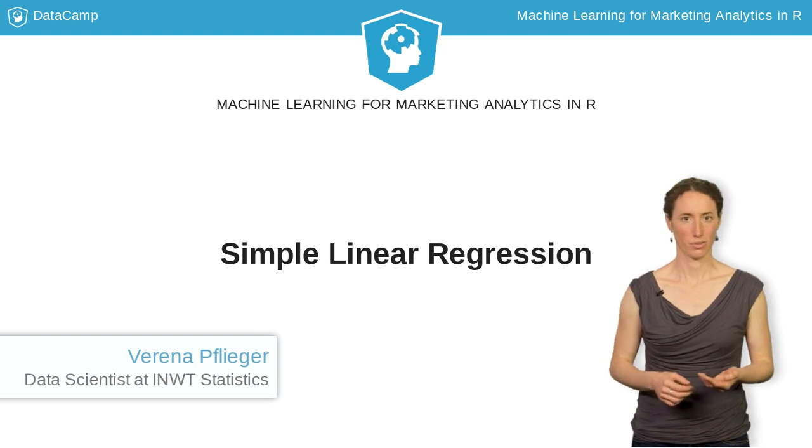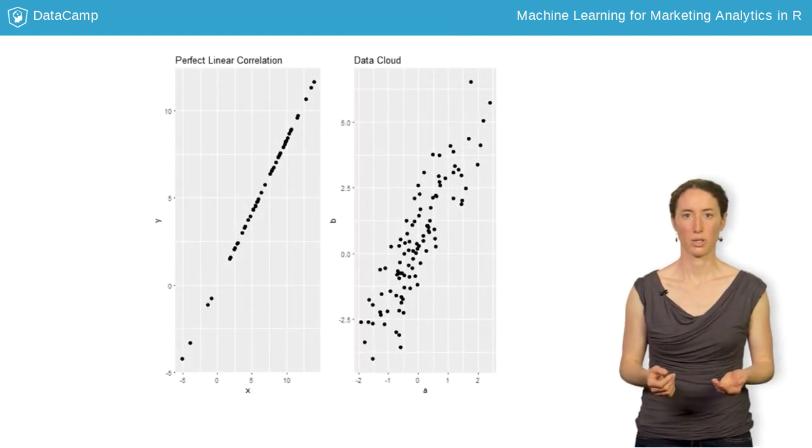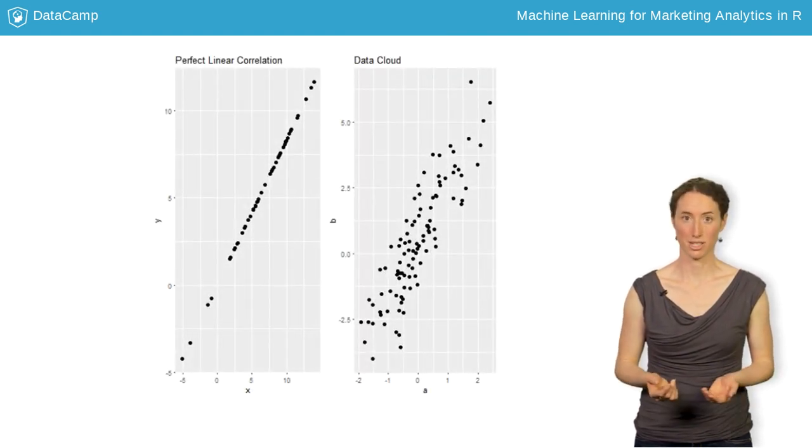When I only use one independent variable for the prediction, we call the model a simple linear regression.